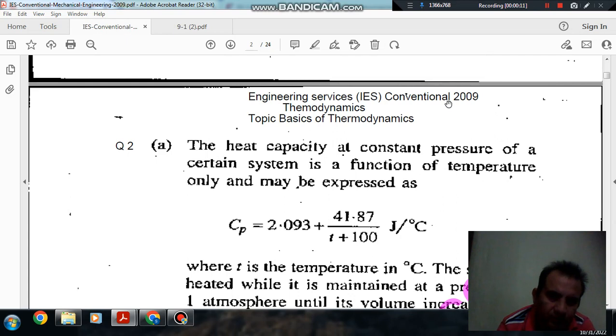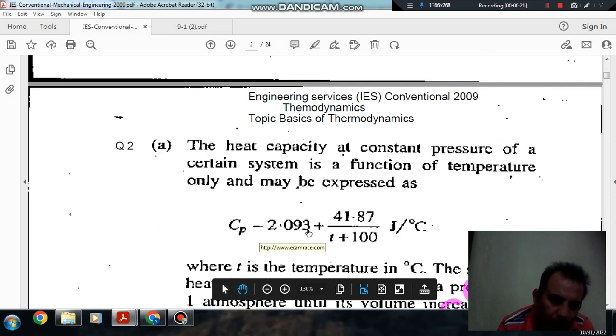Question number 2 from Engineering Services Conventional 2009: The heat capacity of a certain system is a function of temperature only and may be expressed as Cp equals 2.093 plus 41.87 divided by T plus 100 joules per degree Celsius.